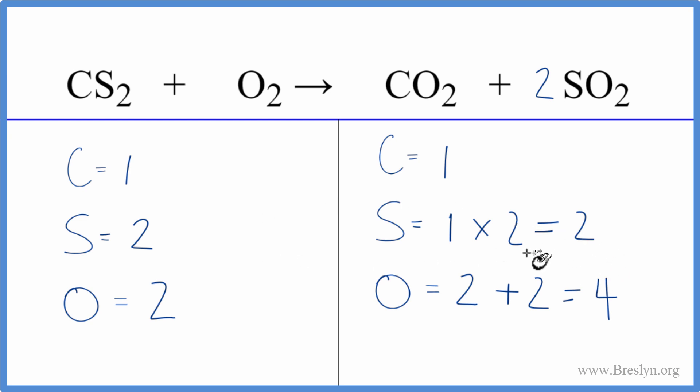So the sulfurs are balanced. Let's update the oxygens now. We have two oxygens here, plus now we have two times two, that gives us four. So we have six oxygen atoms.